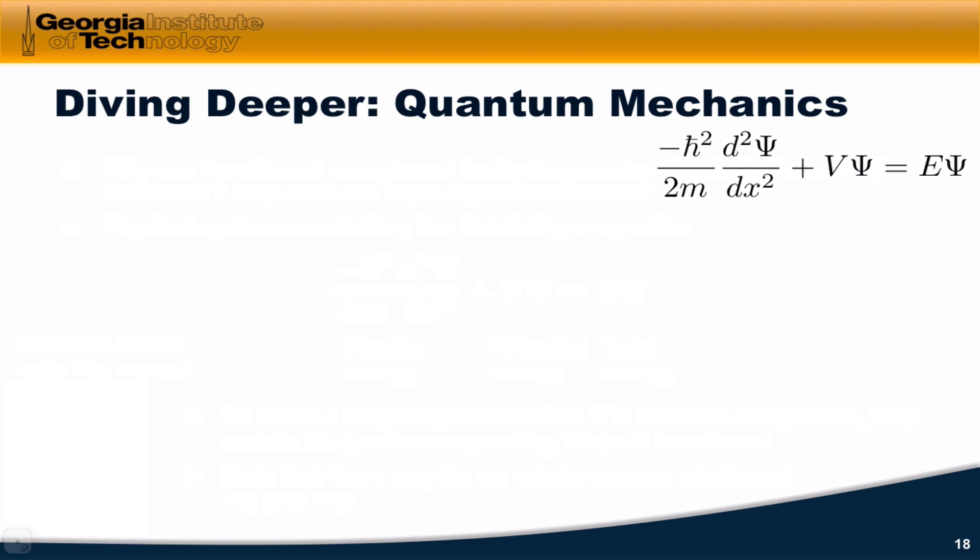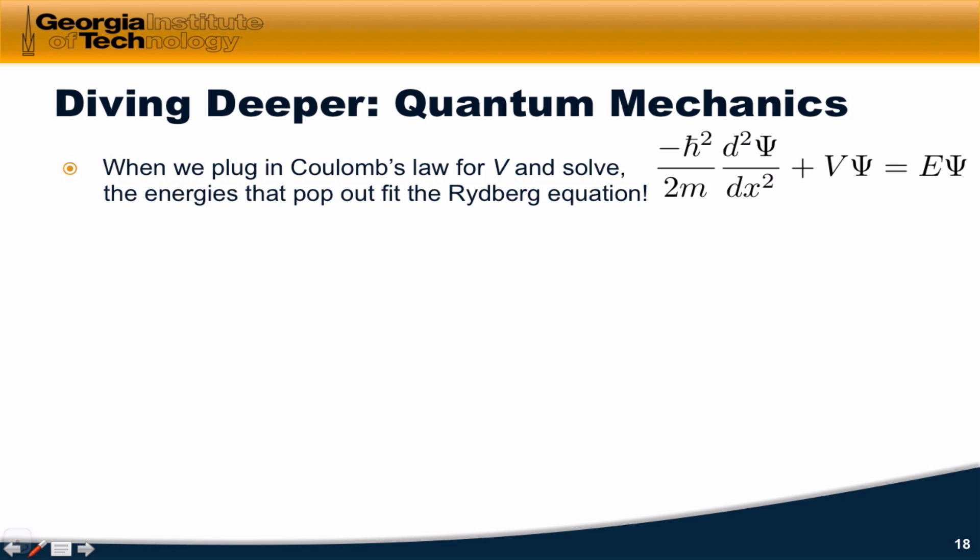The hydrogen atom is a physical system, and in fact, if we think of this V as the potential energy, and we use the Coulombic model we've already seen, when we plug in Coulomb's law for V and we solve this equation,